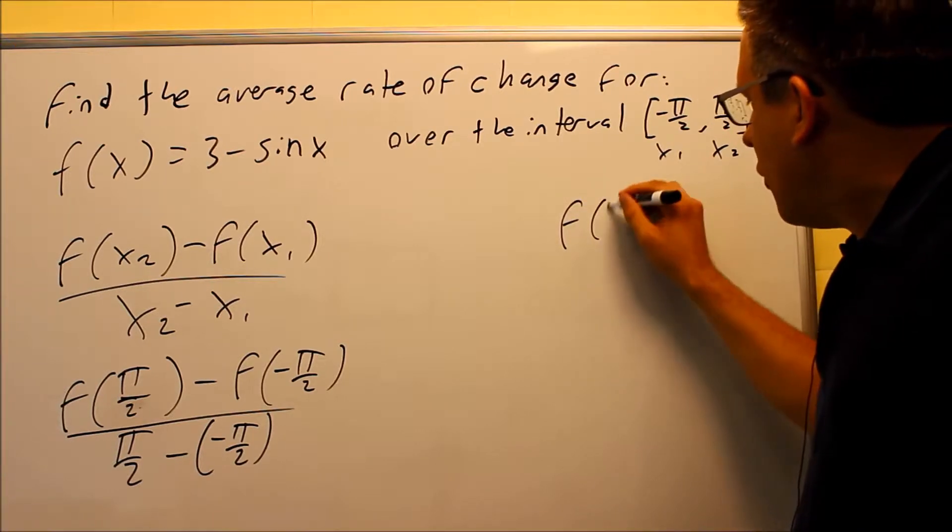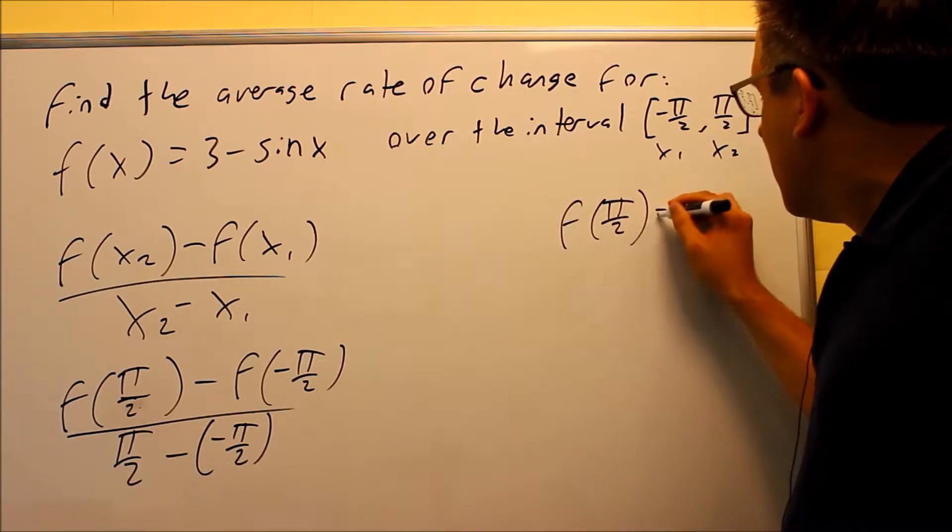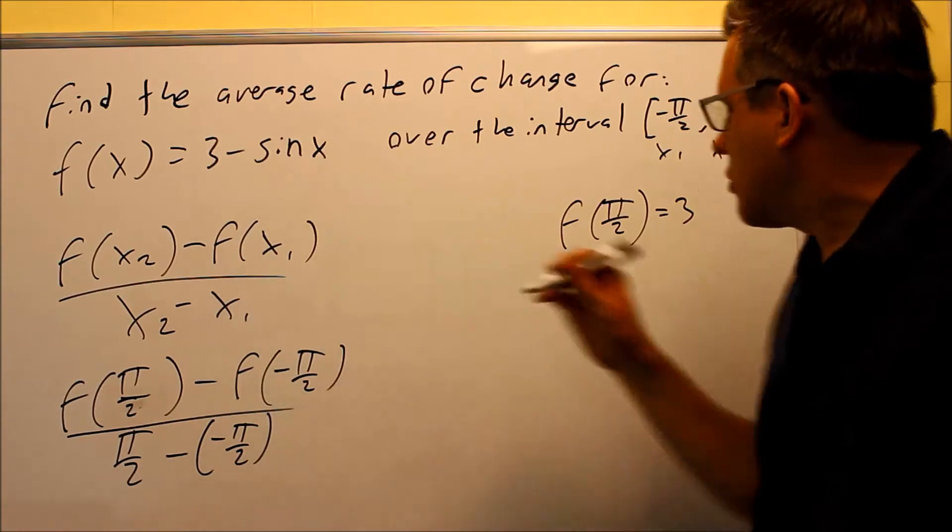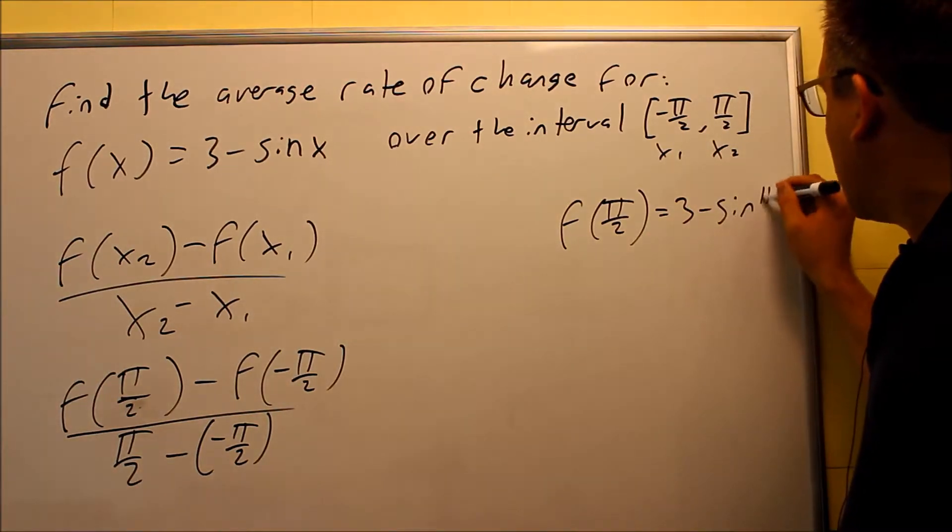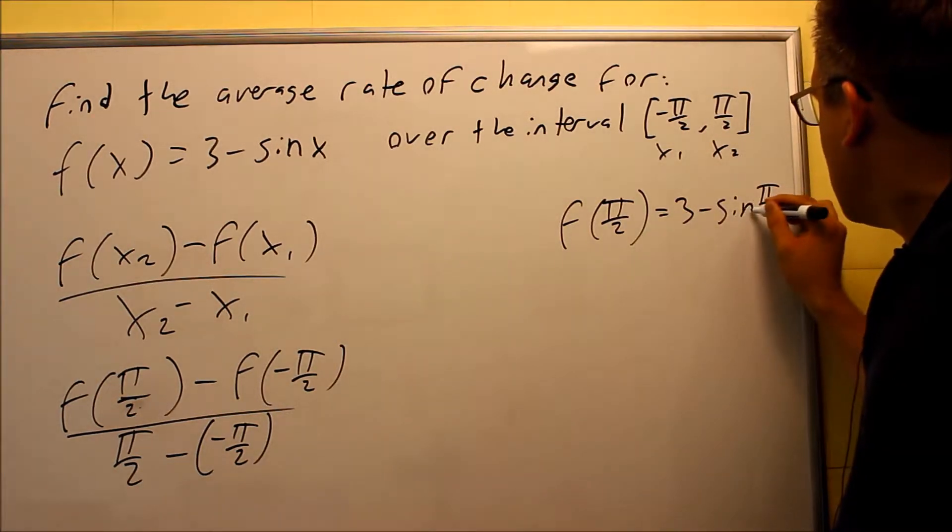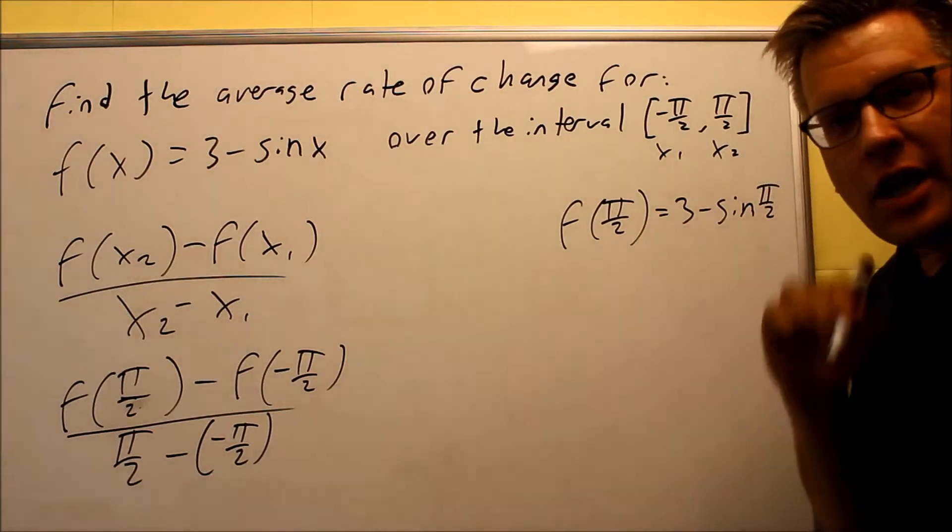We're going to first do f of pi over 2. This is going to be 3 minus sine pi over 2. In calculus,